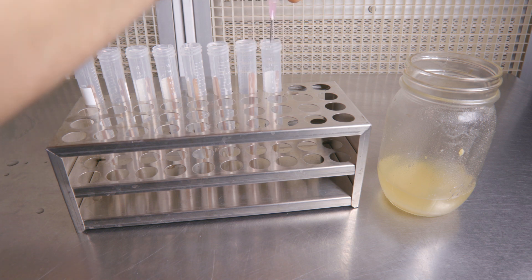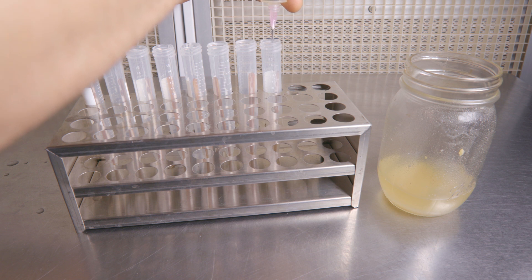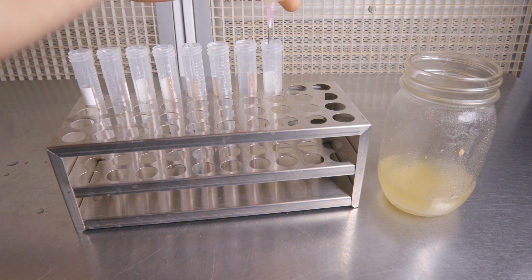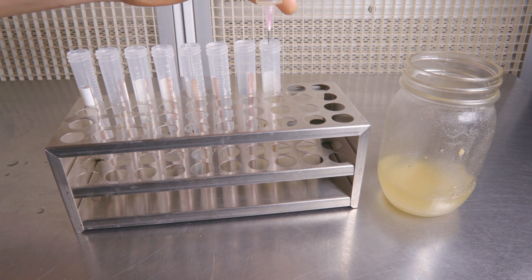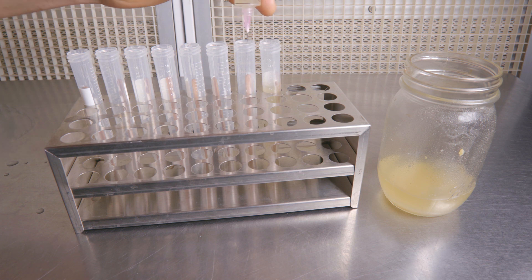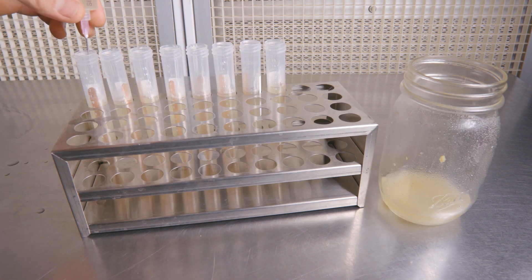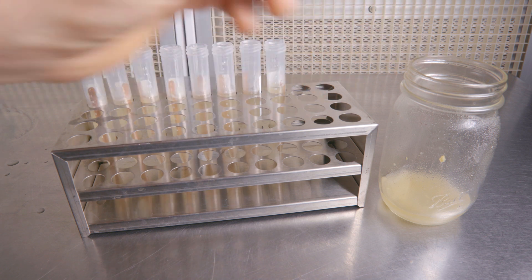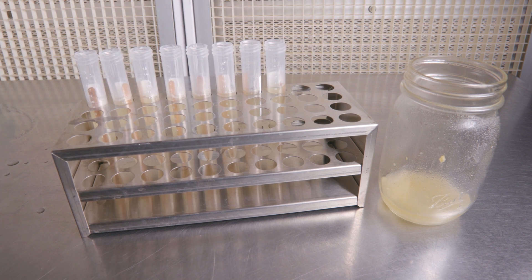These particular slants are 15 milliliters. I like to add 10 milliliters of solution to each slant. That way I have a nice slope to work with after these cool. If you're using a different slant size, simply fill your tube with water and begin to pour it out until you reach the slope of your preference. Then simply fill each one of your slants with that amount of solution.